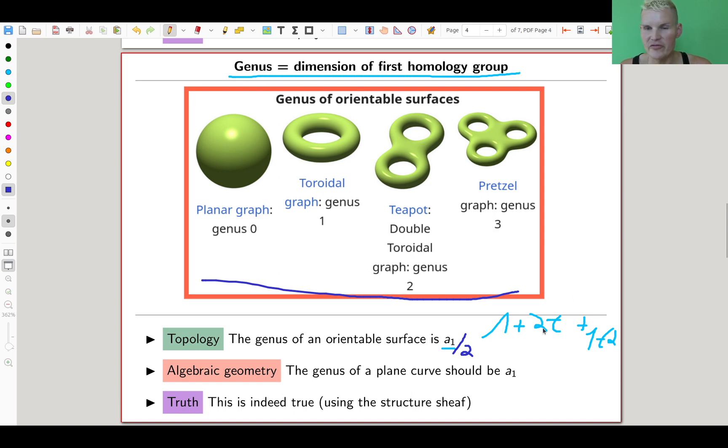The genus of a plane curve, which people discovered much earlier because a plane curve as a complex variety is a manifold, should be exactly that genus. It should be a_1 or a_1 over 2, depends a bit how you count. And that's indeed the case. The genus of a curve that you might have defined differently, there are various different definitions, works out perfectly. It's the dimension of the first homology group. Don't worry about whether you call this a genus or twice the genus, it's the same information. In some sense it's using the structure sheaf.